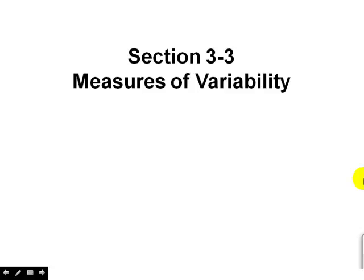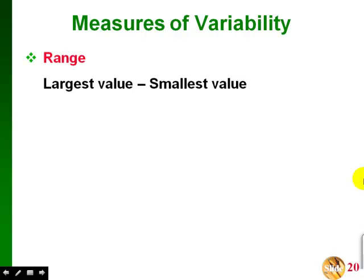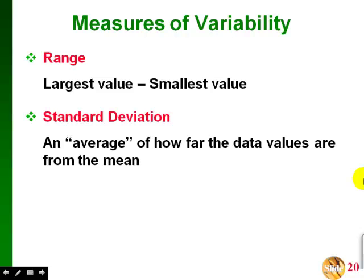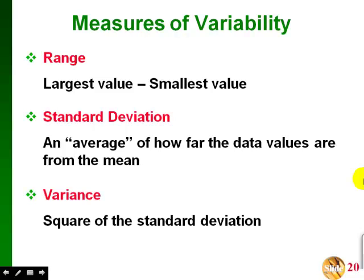Let's go on to section 3.3 about measures of variability. The ones we'll talk about are the range — which is the largest value minus the smallest value in the data set — the standard deviation, which is an average of how far the data values are from the mean, and the variance, which is just the square of the standard deviation.